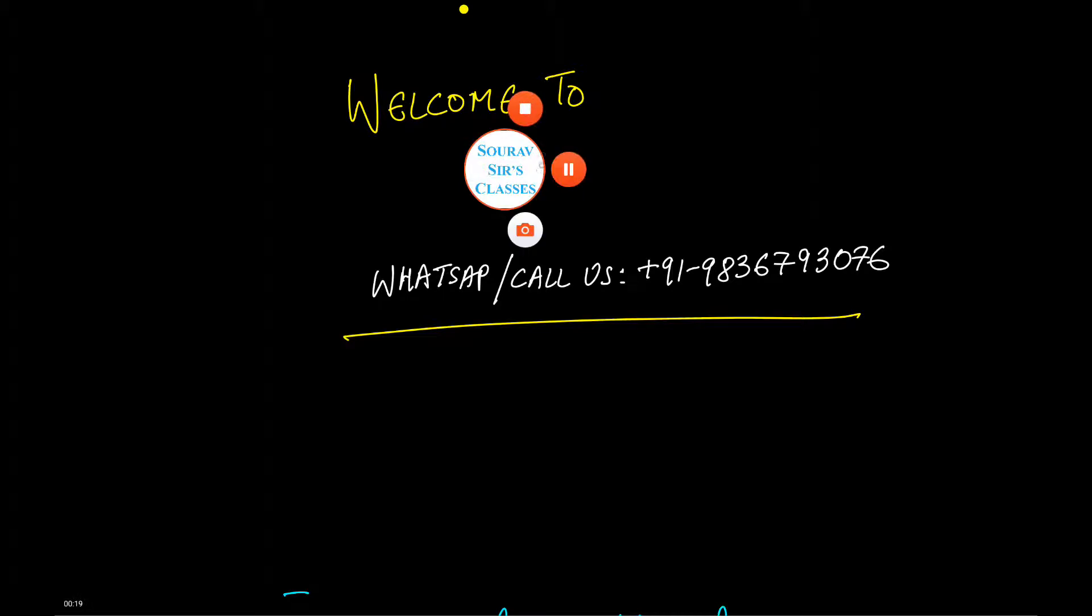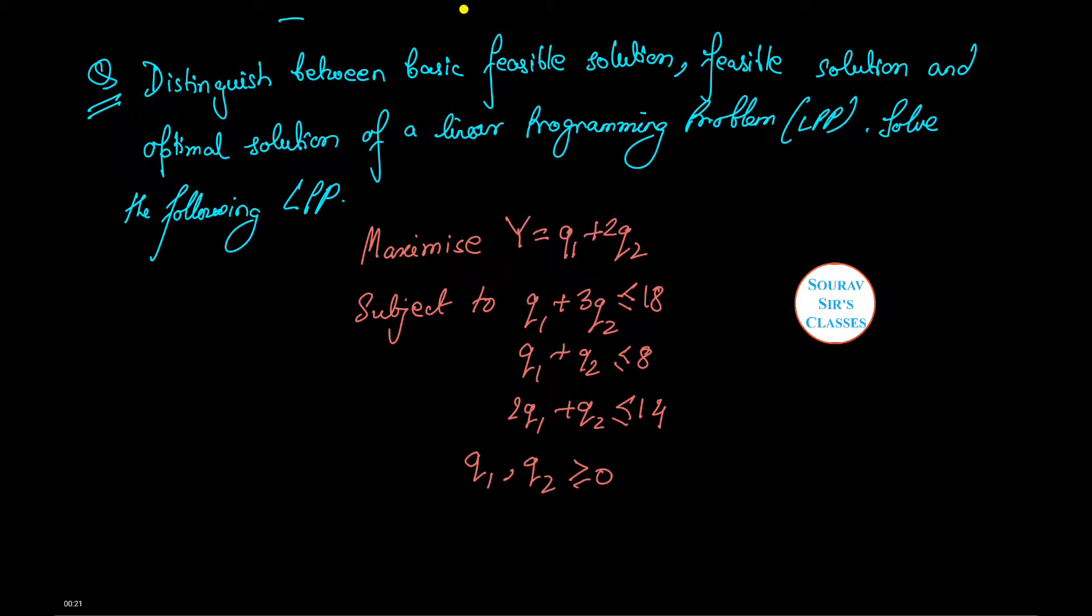Let's see our first question. We need to distinguish between basic feasible solution, feasible solution and optimal solution of a linear programming problem.